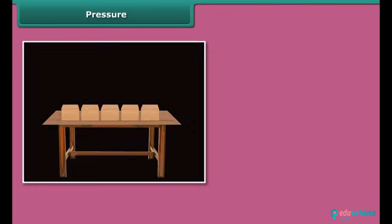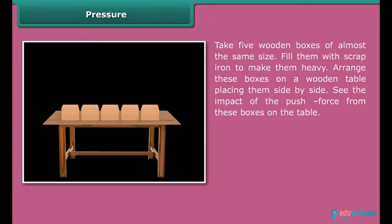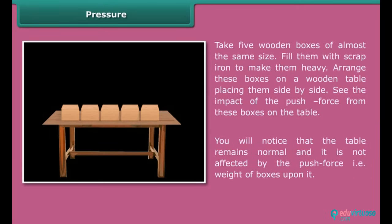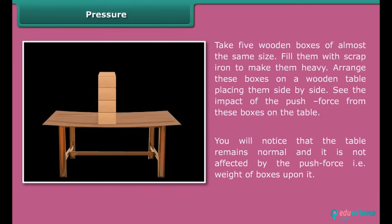Pressure. Let us perform an activity. Take five wooden boxes of almost the same size. Fill them with scrap iron to make them heavy. Arrange these boxes on a wooden table placing them side by side. See the impact of the push force from these boxes on the table. You will notice that the table remains normal and it is not affected by the push force, that is, weight of boxes upon it. Now, rearrange these boxes on the same table placing them towards the center and one over the other. Now, see the impact. In this arrangement, the table either bends or breaks under the weight of boxes. Can you guess why does this happen?